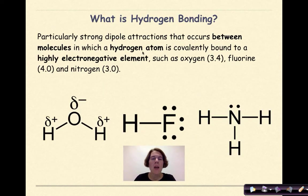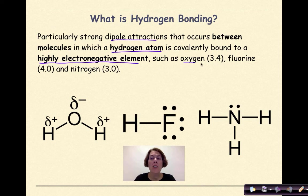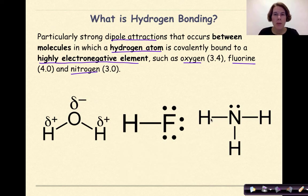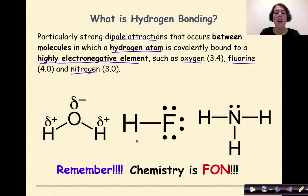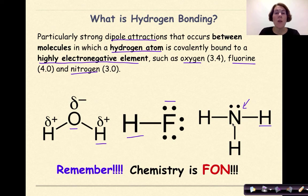So what is hydrogen bonding? Hydrogen bonding is particularly strong dipole attractions that occur between molecules in which a hydrogen atom is covalently bonded to a highly electronegative element such as oxygen, fluorine, and nitrogen. Remember, chemistry is fun — F-O-N. You are looking for molecules that have oxygen, fluorine, or nitrogen bound to a hydrogen in order to experience hydrogen bonding. These are the three most common molecules on the Regents exam, but other examples are always possible.